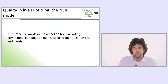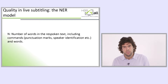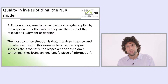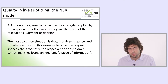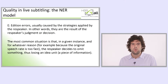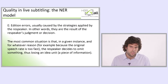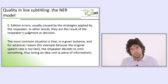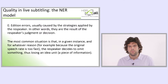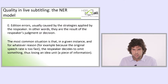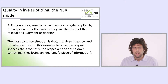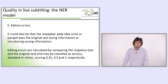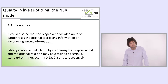N is the number of words in the respoken text, including commands, punctuation marks, speaker notification, etc. E are addition errors, usually caused by the strategies applied by the live subtitler or the respeaker — they are the result of the respeaker's judgment or decision. This formula can be used in any type and context of live subtitling produced by different methods. The most common situation is that for whatever reason, for example because the original speech rate is too fast, the respeaker decides to omit something, losing an idea unit. It could also be that the respeaker adds idea units or paraphrases the original text, losing or introducing wrong information.